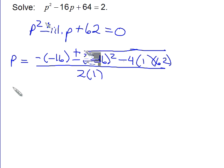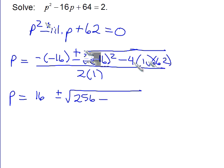So now we need to simplify, giving us p is, this becomes 16, plus or minus, squaring negative 16 gives us a positive 256. This is a negative times a positive times a positive, so this will give me a negative, and 4 times 62 is 248. This is all being divided by 2.